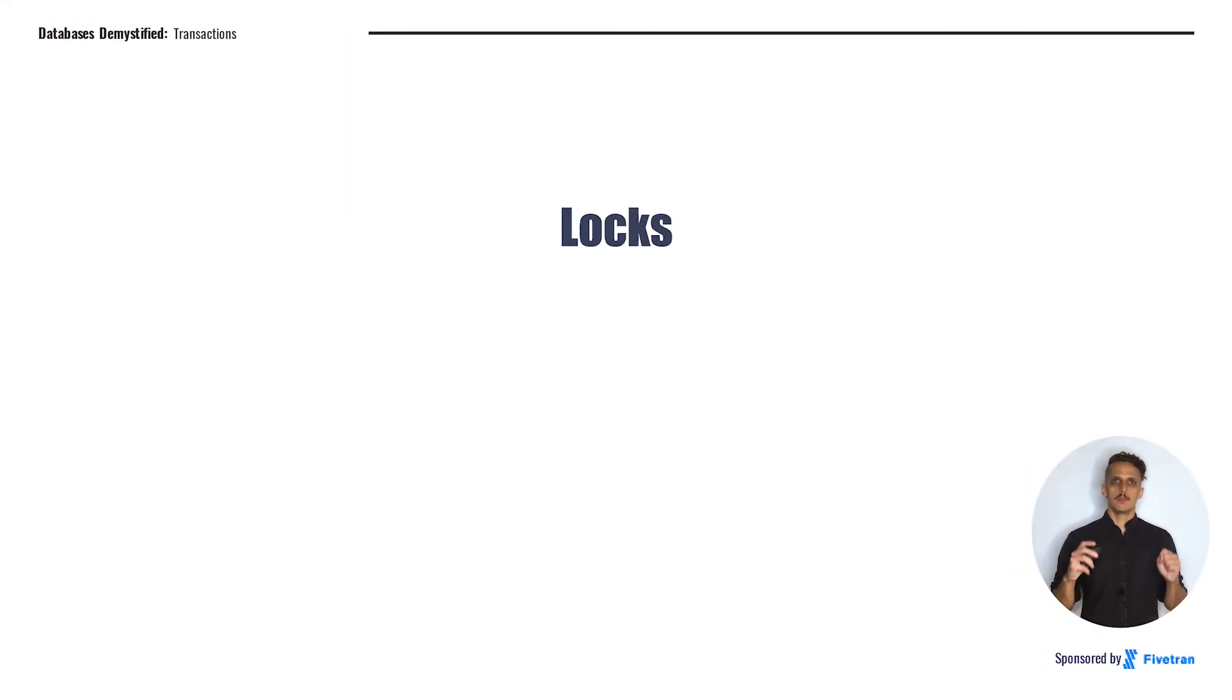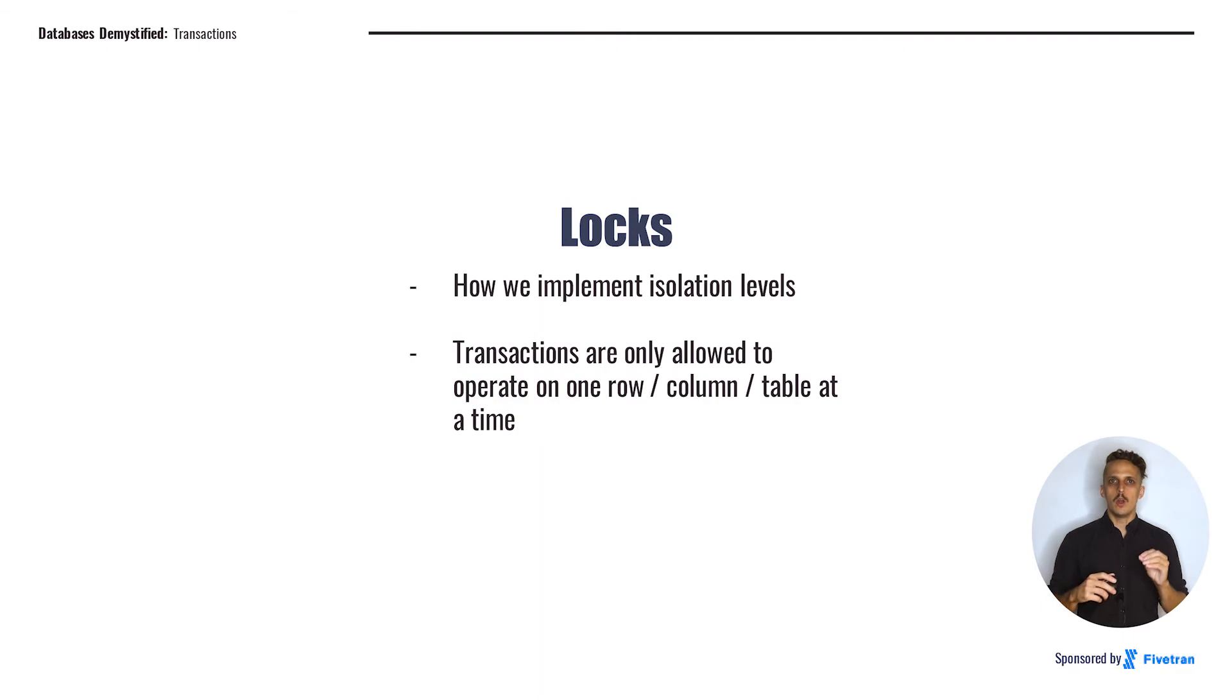To understand isolation, you really need to understand locks. Locks are, extremely generally speaking, how isolation is implemented in different databases. The people who are programming databases have to figure out how to provide the level of isolation that the application needs, how to make their transactions serializable. And they do that by locking the database. Or, more precisely, locking individual rows, columns, or tables so that other transactions that need to access this data must wait before proceeding.